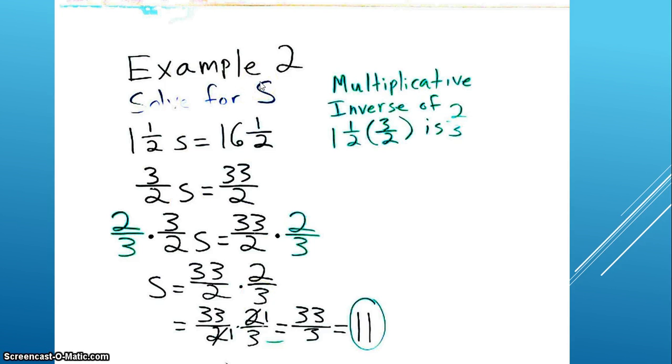Example 2 is 1 and 1 half s equals 16 and 1 half. Let's change all our mixed numbers into improper fractions. So 1 and 1 half is 3 halves, and 16 and 1 half is 33 over 2.